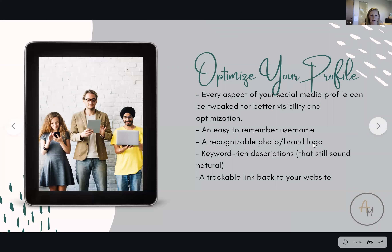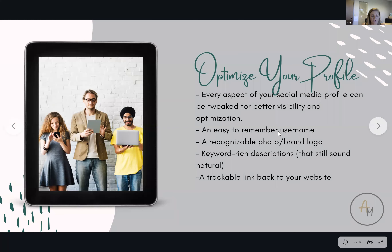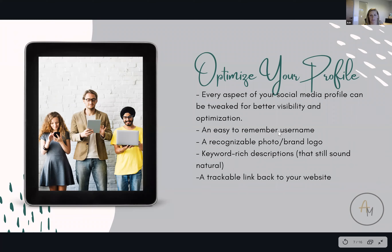The first step is to optimize your profile. Every aspect of your social media profile can be tweaked for better visibility and optimization. When you have your profile on Facebook, you want to make sure you have an easy-to-remember name, a recognizable photo or brand logo, or both. If you're going to do everything on your personal side, use keyword-rich descriptions that sound natural. Going into your bio section, instead of just 'I'm a luxury real estate agent in Worthington,' build that up.